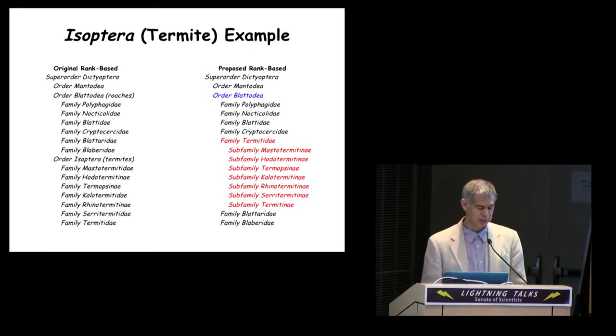First, the composition of Blattodea, the roaches, changes to include Isoptera, the termites. And this change is necessary to reflect the new hypothesis of relationships.